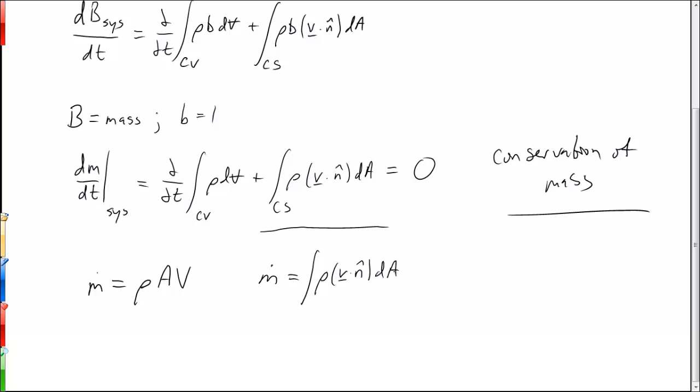If it turns out that the density is constant across that cross section, then we can take the density outside and we can define what we call the average velocity, which is just going to be equal to this integral over A of rho v dotted with n hat dA over the density times the area.